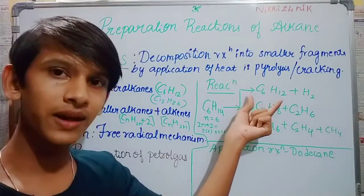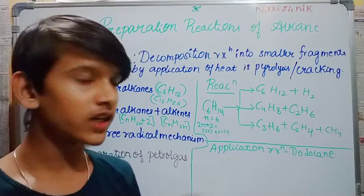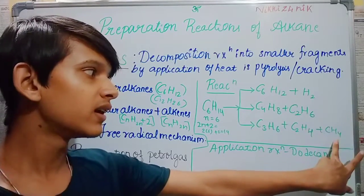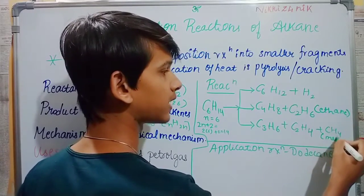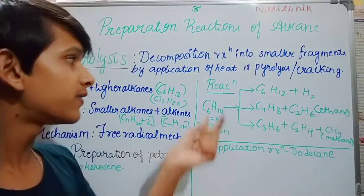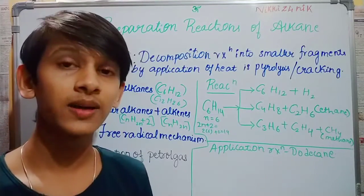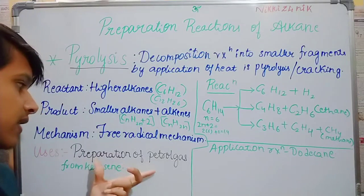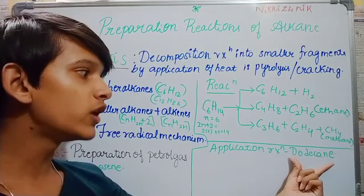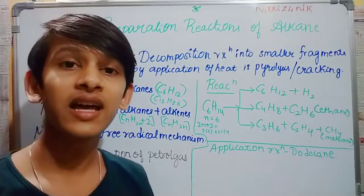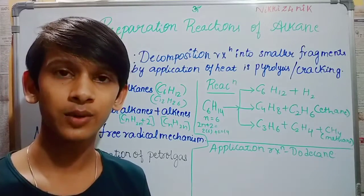Different types of breakdown: first, alkane breaks down into ethane and methane. I will write the names — ethane and methane. This reaction is very important; it is an application-based reaction. If you look at the application — let's prepare petrol gas from kerosene. If you look at dodecane, a substance, an organic compound, it is a type of kerosene particle. So from dodecane, we can get petrol gas from kerosene — this is a reaction.